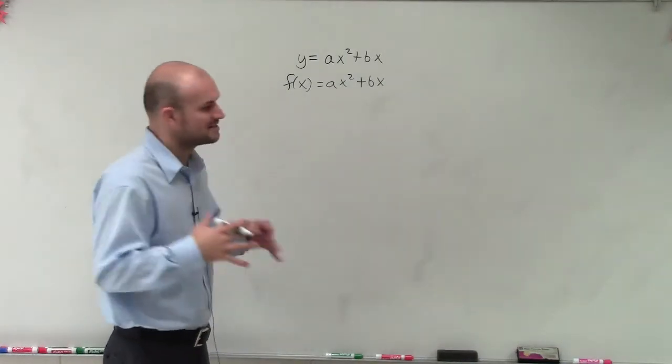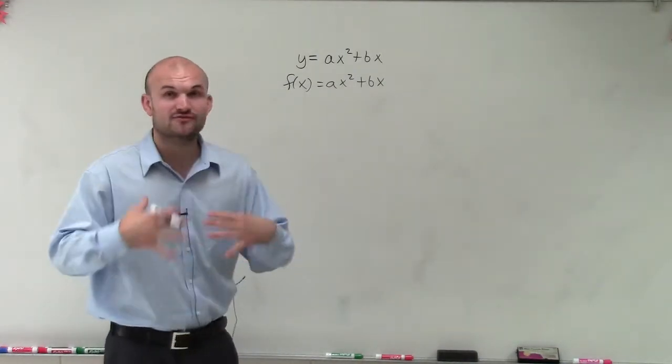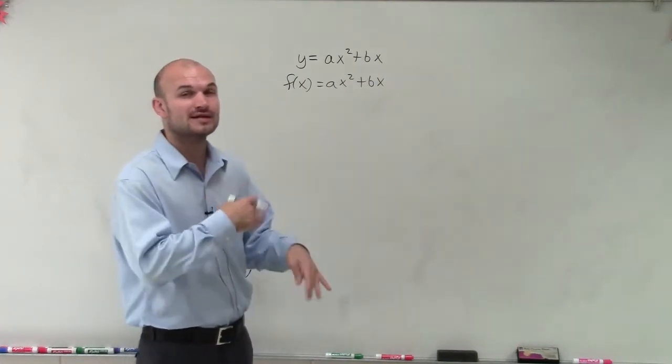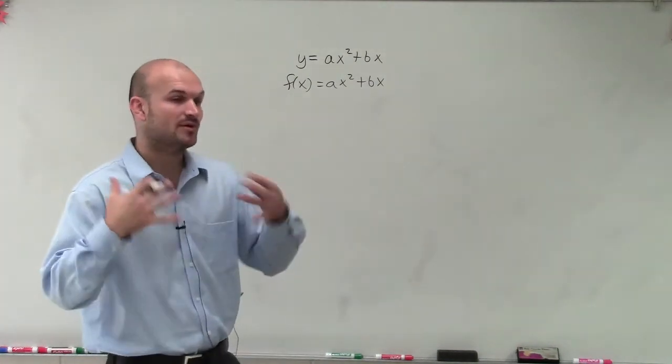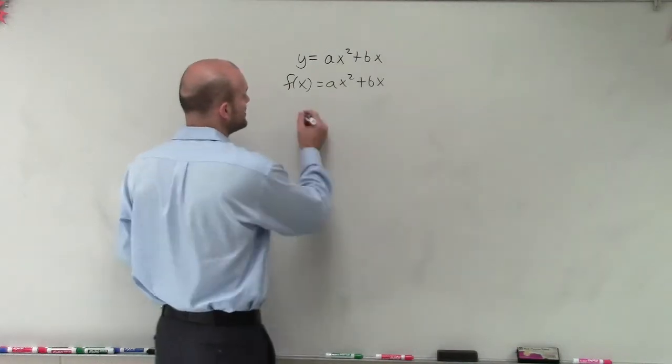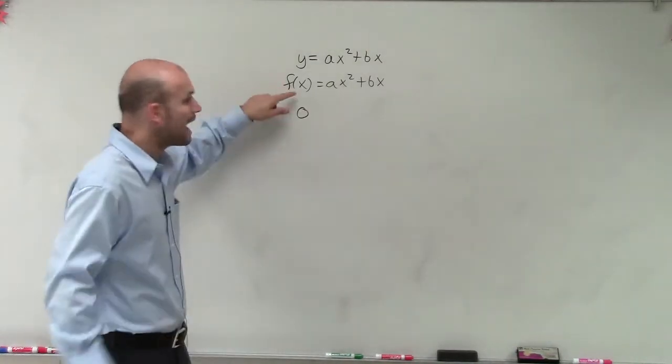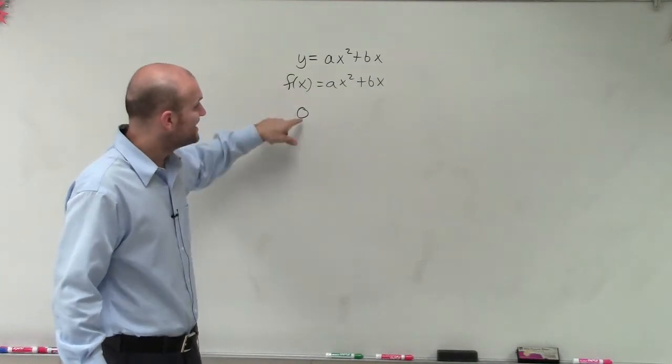And what that means is our output value, what we're looking for, is our x-intercepts. We're looking for where the graph crosses. Now we learned how to graph those and find them, but what if we're not going to be graphing? We know that at the x-intercept, our y-value, or our output value of a function, is equal to zero.